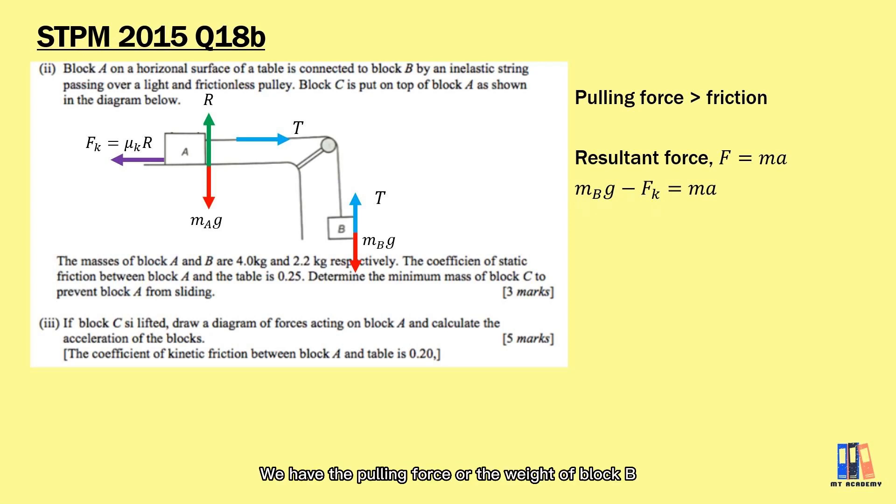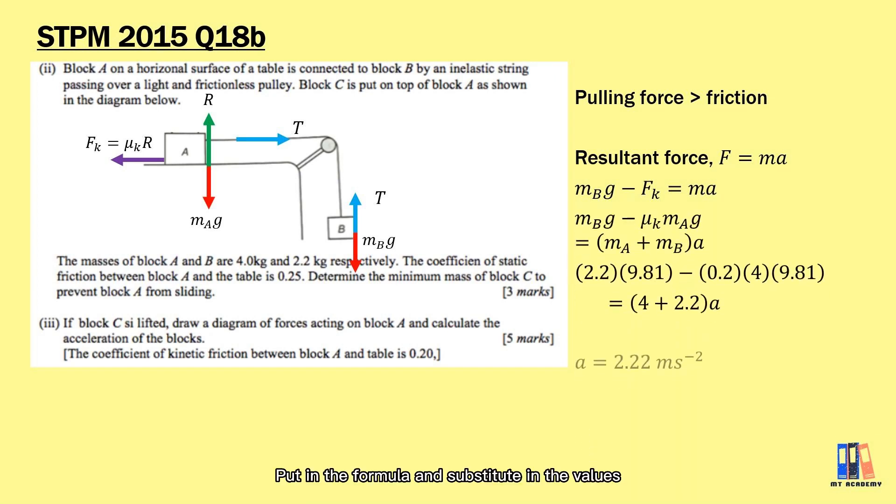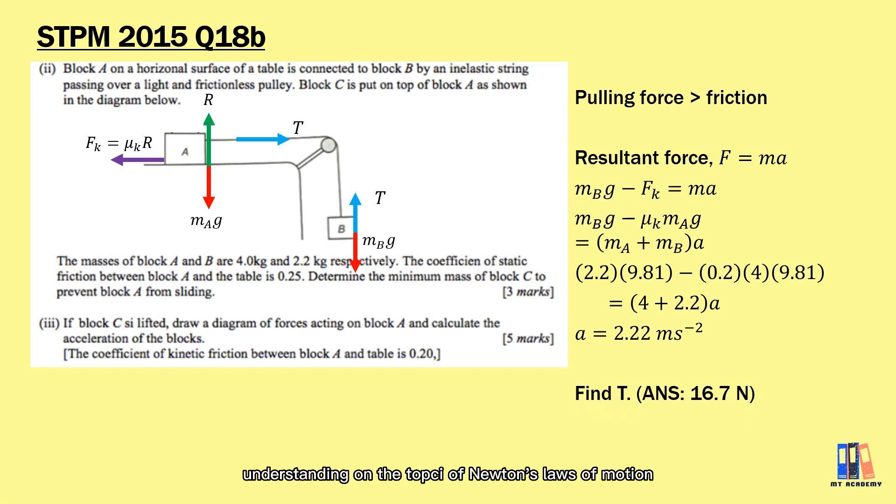So we have the pulling force or the weight of block B minus the kinetic friction equal to ma. Putting in the formula and substituting the values, you should be able to get the acceleration equal to 2.22 m per second squared. I hope this is clear. To test your understanding on Newton's laws of motion, please calculate the tension in the string when block A is moving. The answer is 16.7 N.